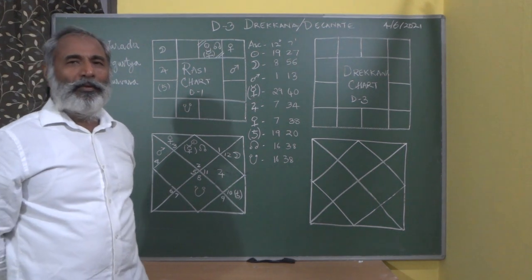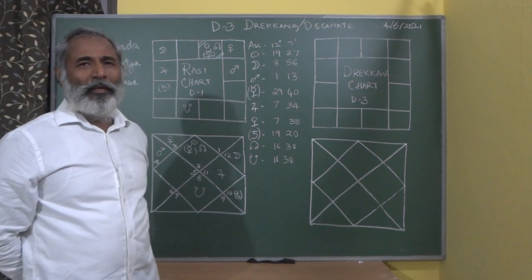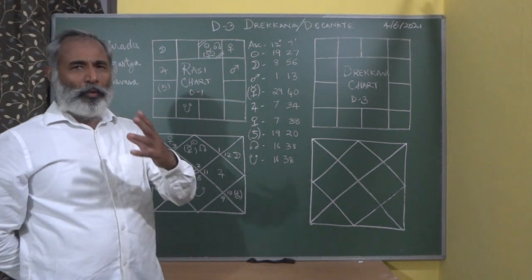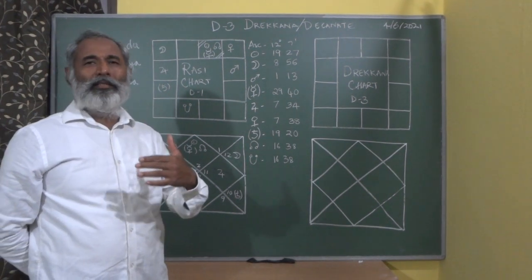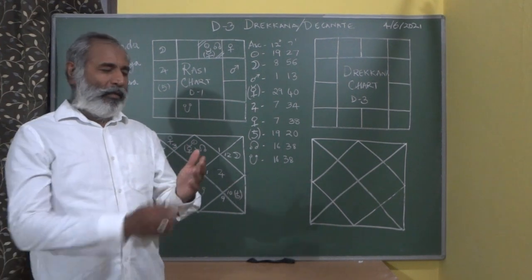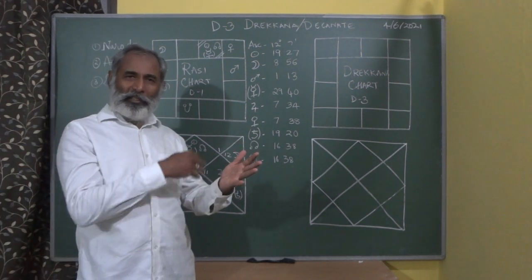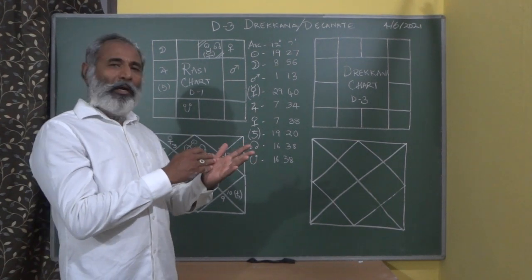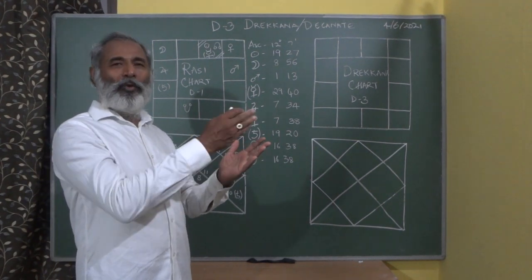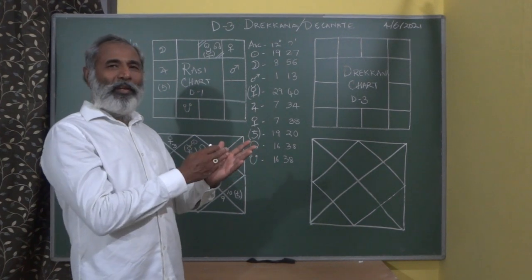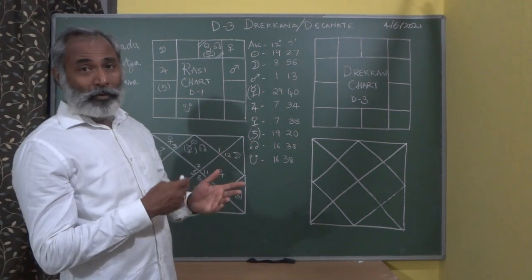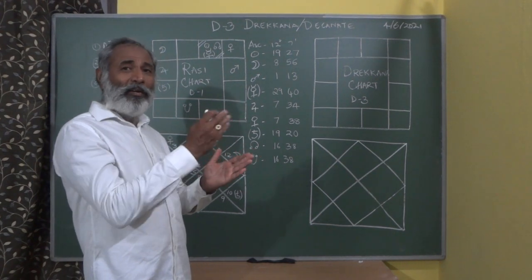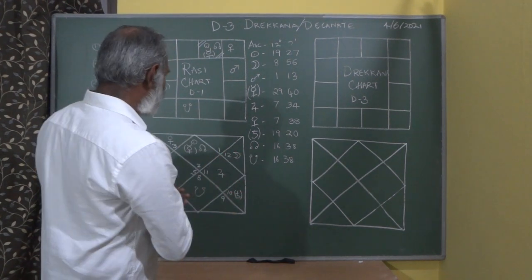Hello, this is Shnesha Chanam from Africa and Myself. Yesterday we discussed the Hora chart. Today we're going to see the D3 chart, the third divisional chart. Earlier the chart was 360 degrees divided into 30 degrees times 12 signs. In D2 it became 15 degrees times 24 pieces. Now today we're going to see 10 degrees times 36 pieces.